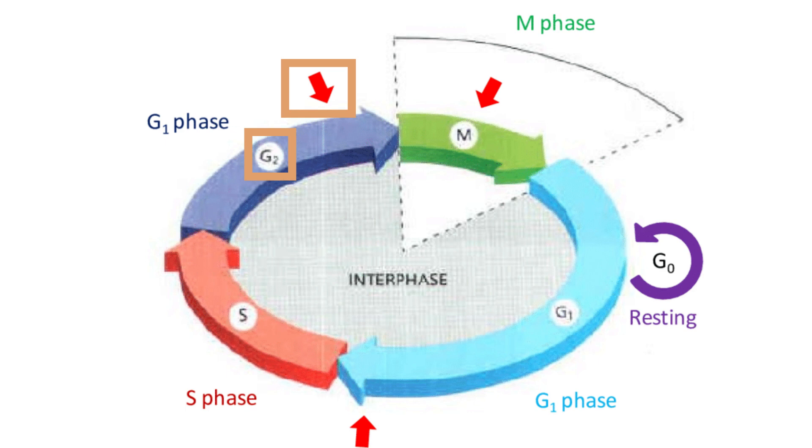If the checkpoint senses any damages, the cell will stay in the G2 phase until it corrects its errors. If the damage is too bad to be corrected, the cell will undergo programmed cell death or apoptosis. This is to prevent any of the damaged DNA from being passed on to the daughter cells. A failure of this mechanism can cause cancer.